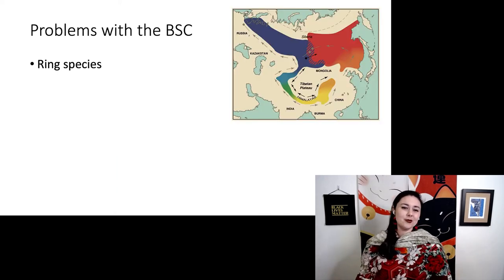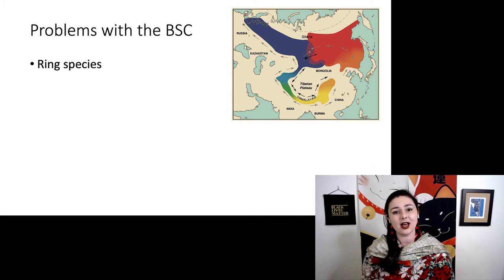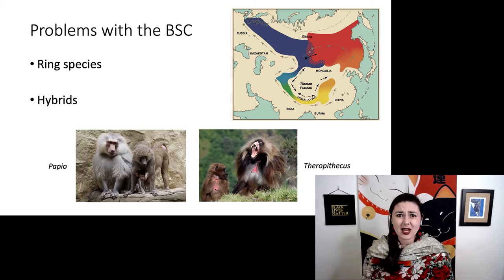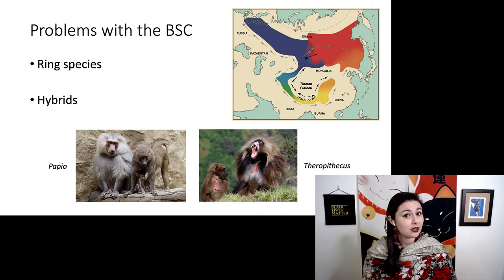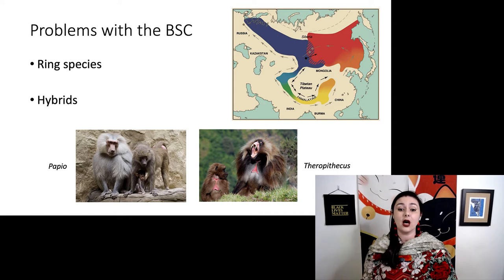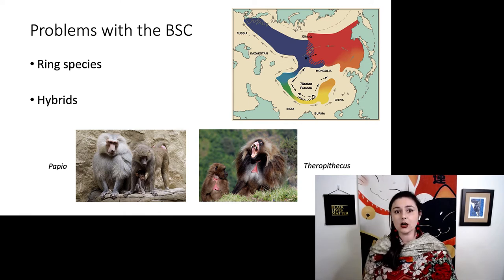There are also problems with ring species — each population can breed with adjacent ones, but the populations on the ends cannot breed with each other. There's also the problem of hybrids. For example, Papio, generic baboons, and Theropithecus, or geladas, have been separated for about five million years based on a pretty good fossil record and are fairly distinct from each other, yet they still produce viable hybrids every now and then. Generally a hybrid individual will go back into one of the other populations, so there are actually small levels of gene flow even after five million years of separation. That's a pretty big problem.